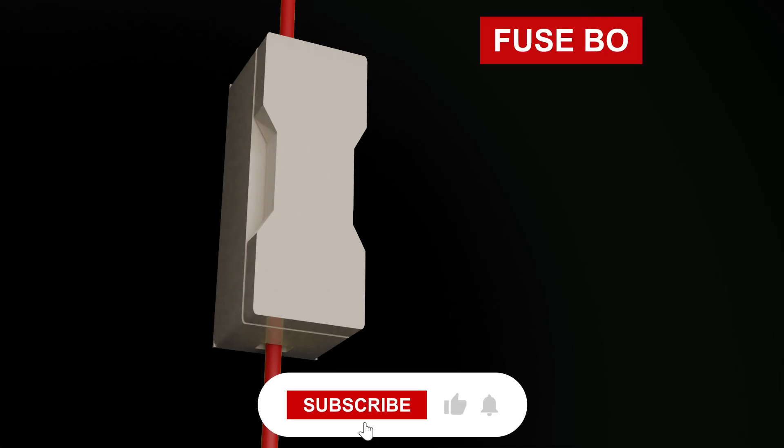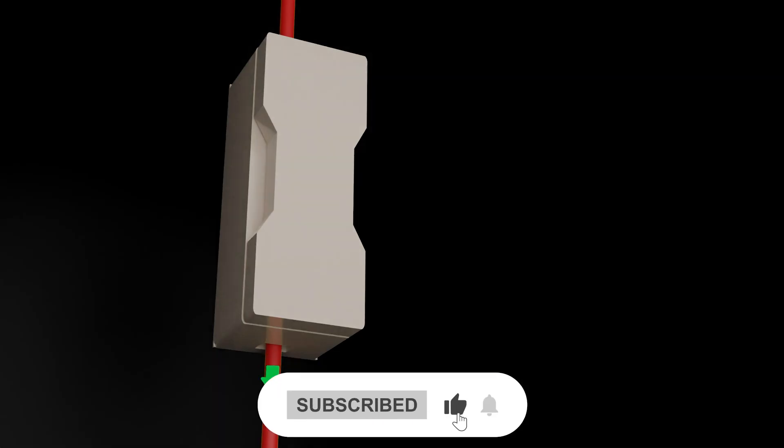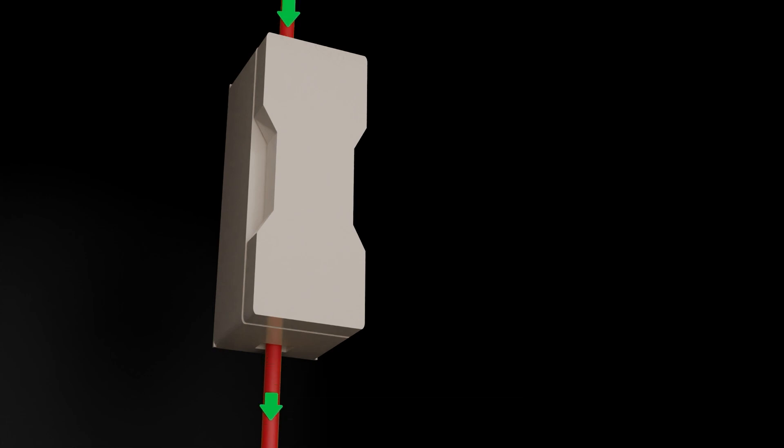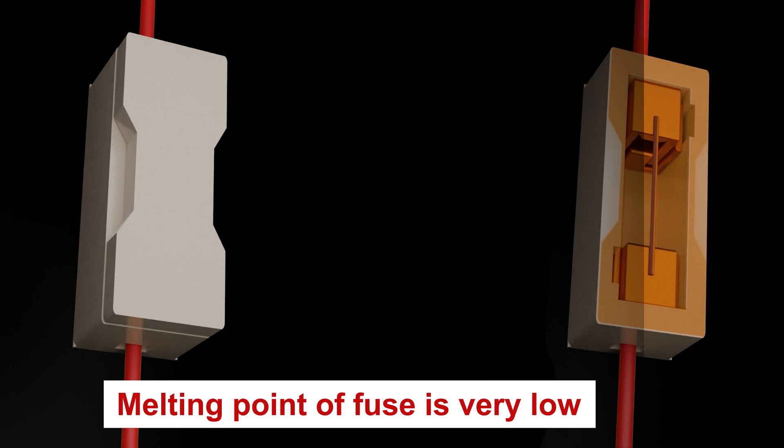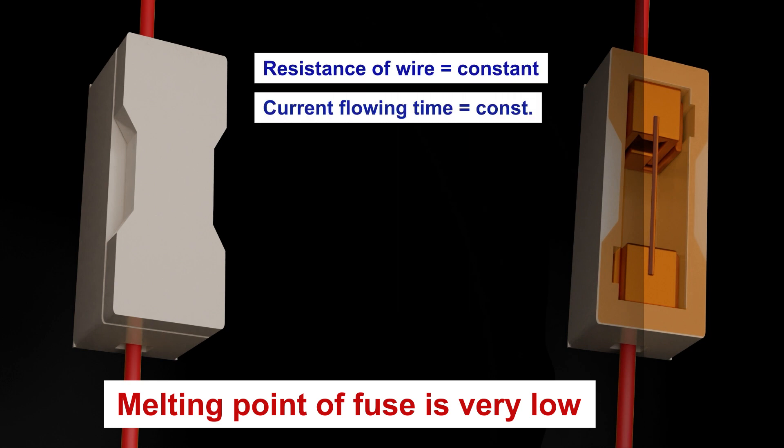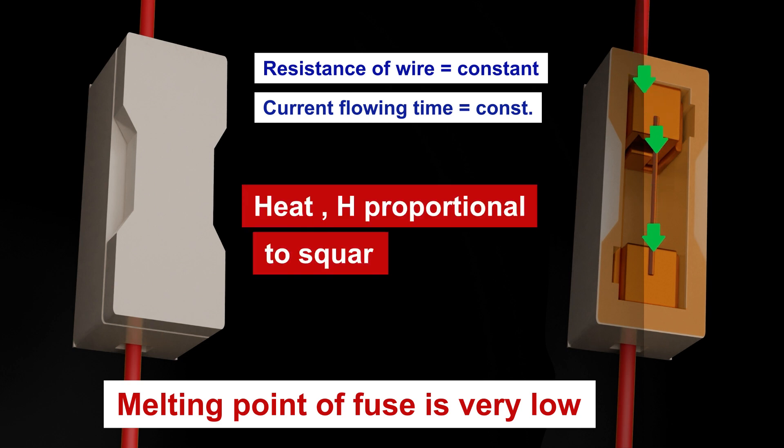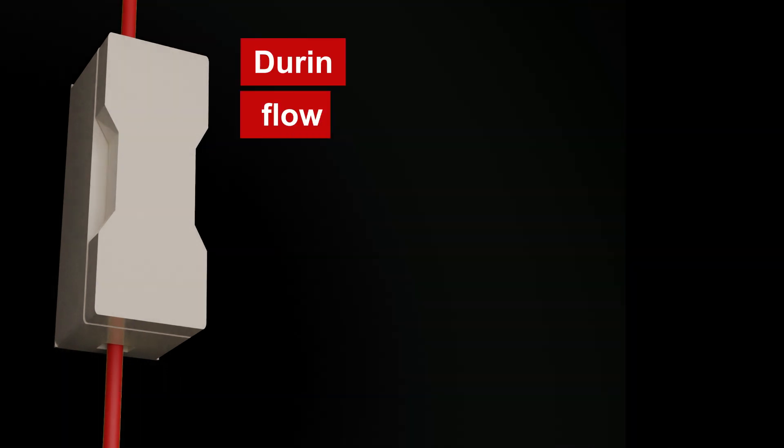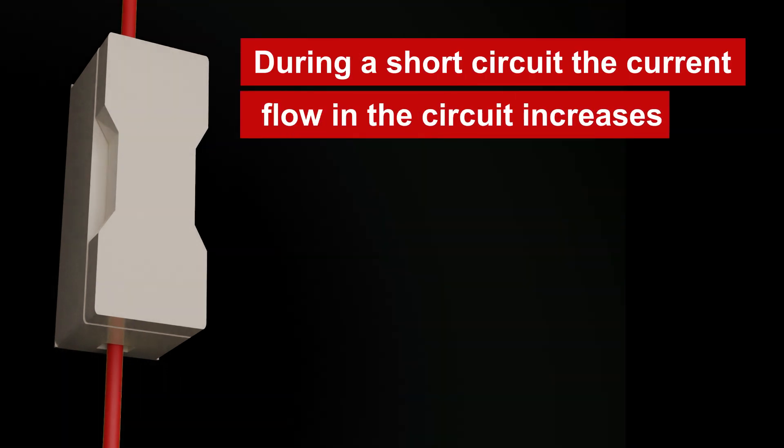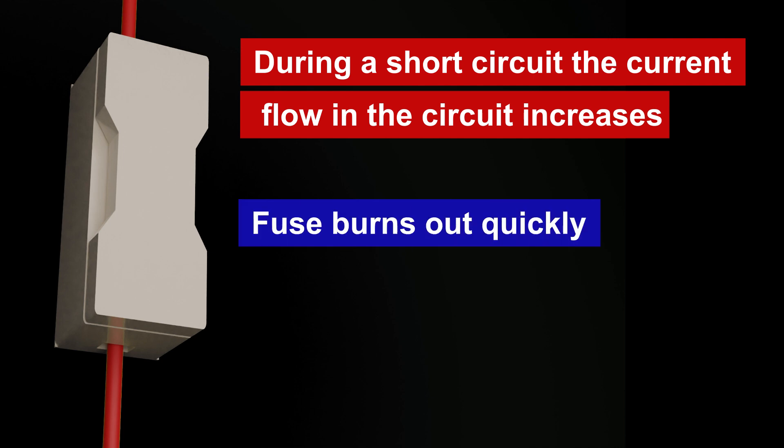Earlier, fuse boxes were used in the house. This fuse box contains a fuse wire through which current flowed. The melting point of this fuse wire is very low. If the resistance and current flowing time of a particular wire are constant, the heat generated in the wire is proportional to the square of the current. So if more current flows through the wire, more heat will be generated. During a short circuit, the current flow in the circuit increases, and if the current flow suddenly increases, the fuse burns out very quickly.